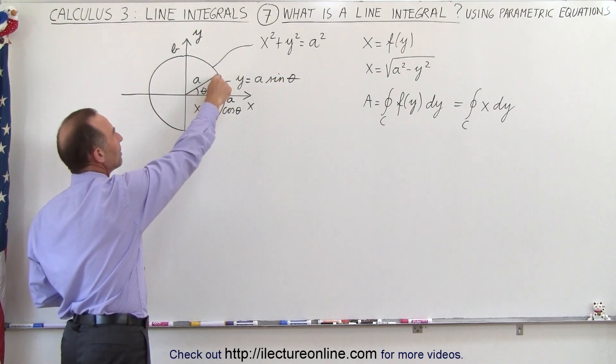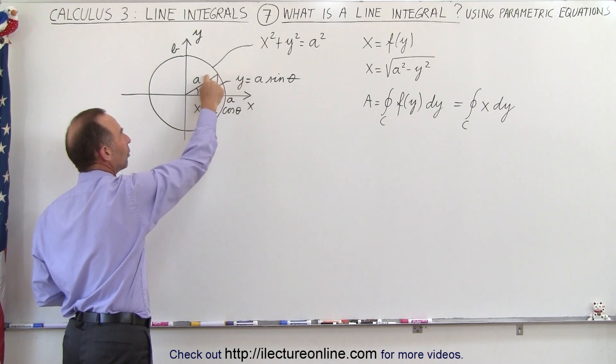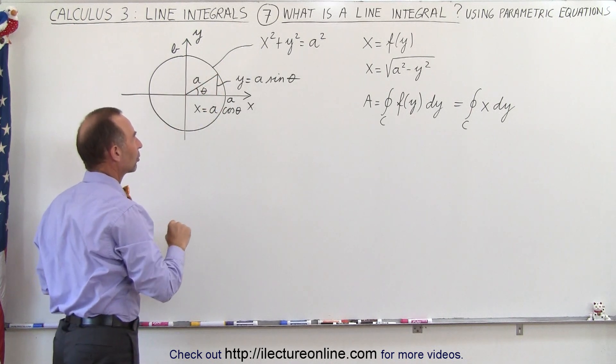And notice if we pick any point on the circle, the distance from the center to that point will of course be a because the radius is a for the entire circle.